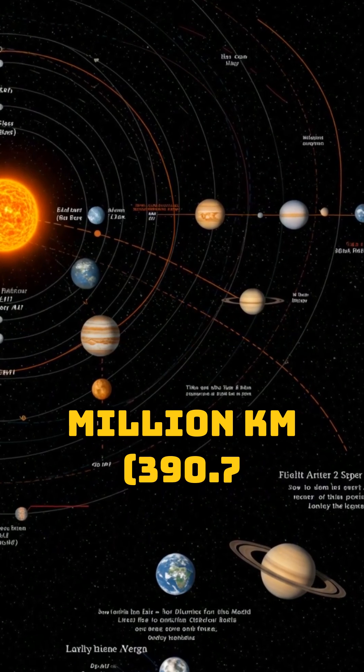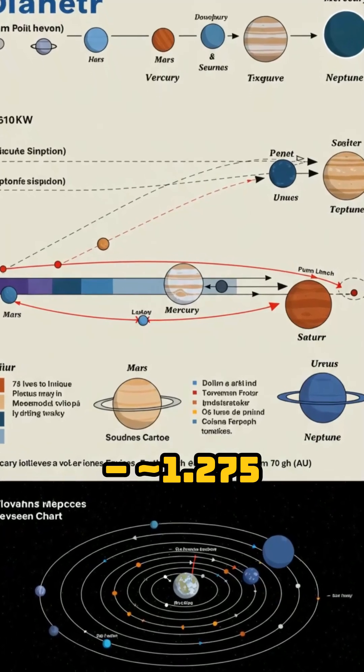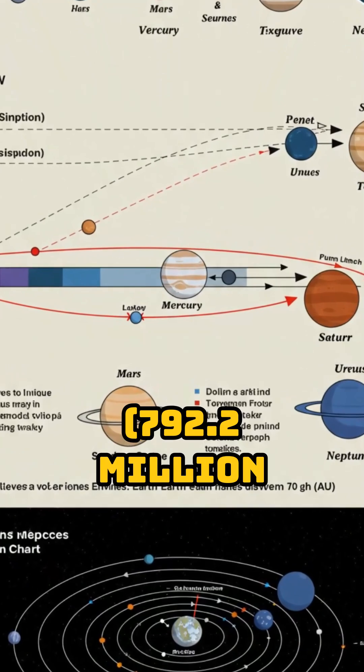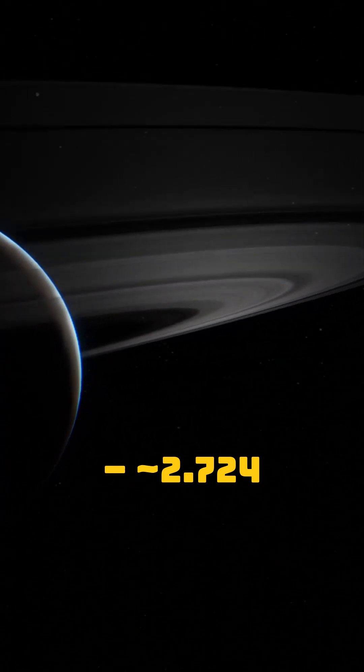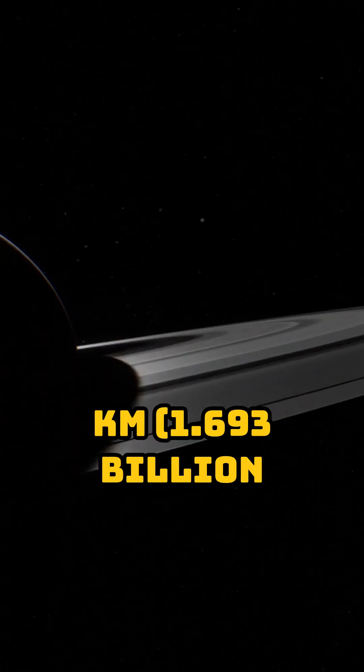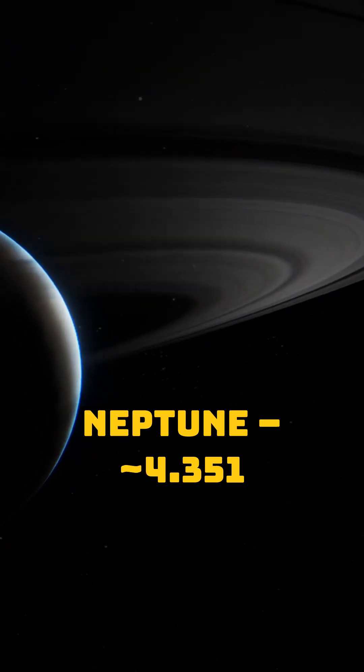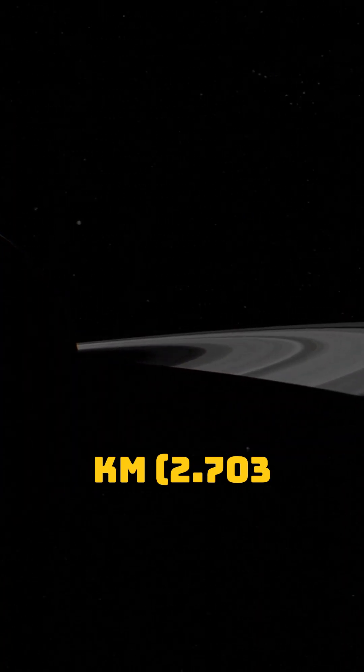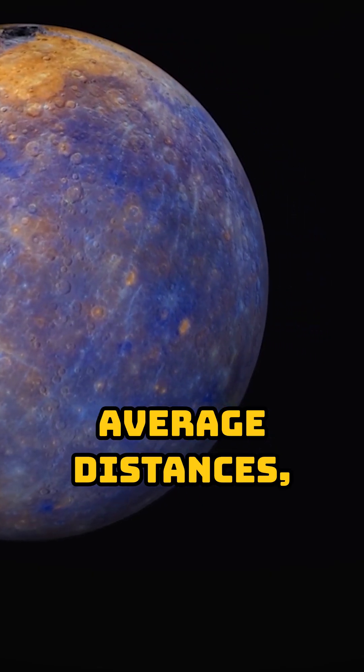Saturn, 1.275 billion km, 792.2 million miles. Uranus, 2.724 billion km, 1.693 billion miles. Neptune, 4.3 billion km, 2.703 billion miles. These are average distances measured from Earth to each planet, not from the Sun.